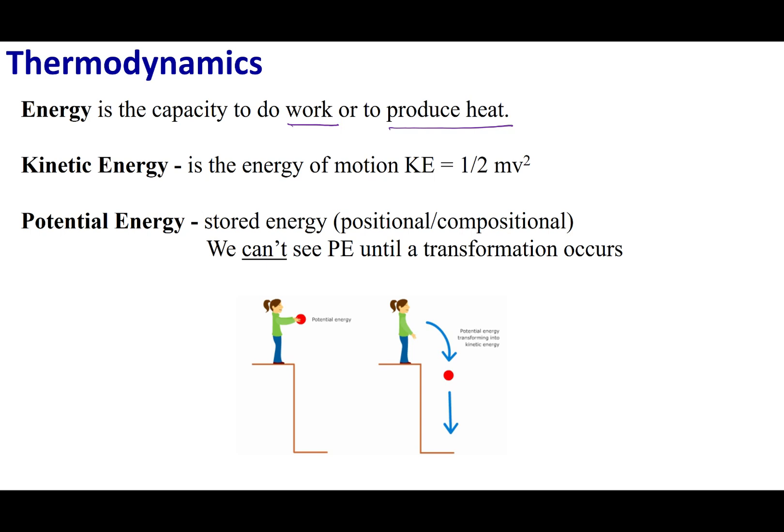What we're going to do in thermodynamics is we are going to be little accountants. That means we are going to monitor and keep track of all the energy in our system surrounding and every kind of transfer that we have. We like to categorize things. The first category is kinetic energy versus potential energy. Kinetic energy is the energy of motion. If something is moving, that is said to have kinetic energy.